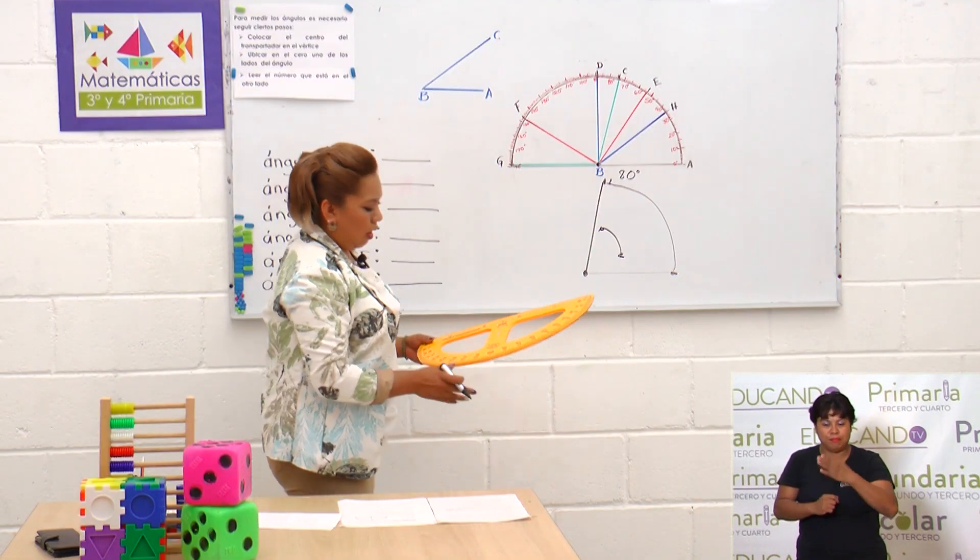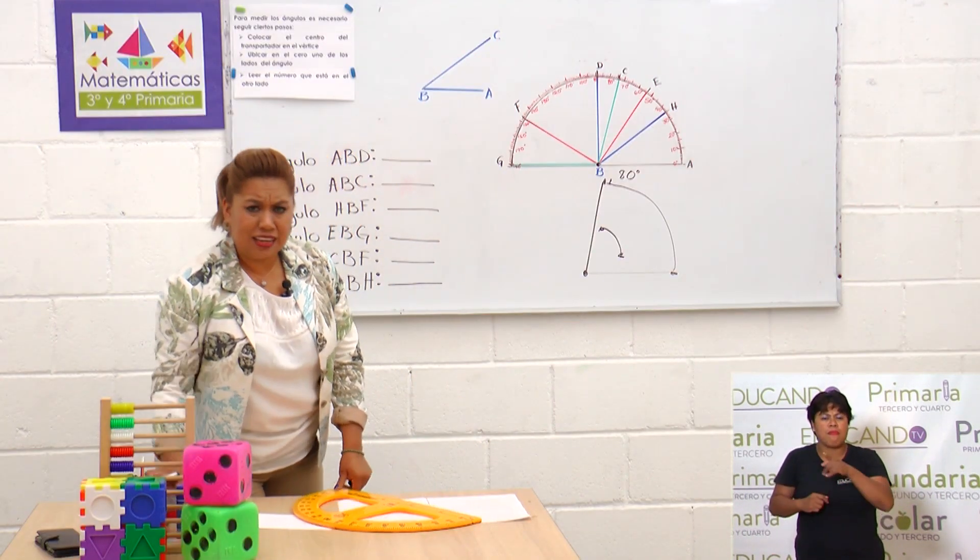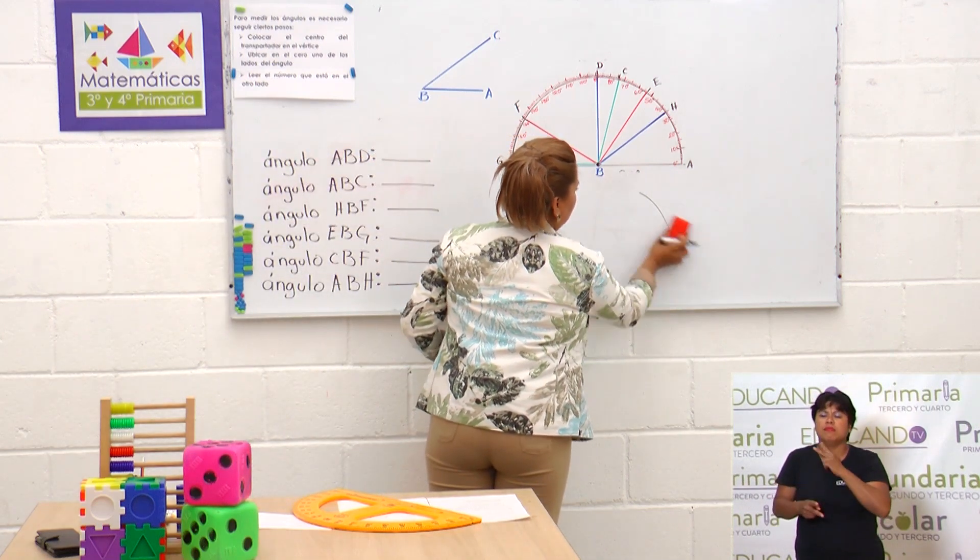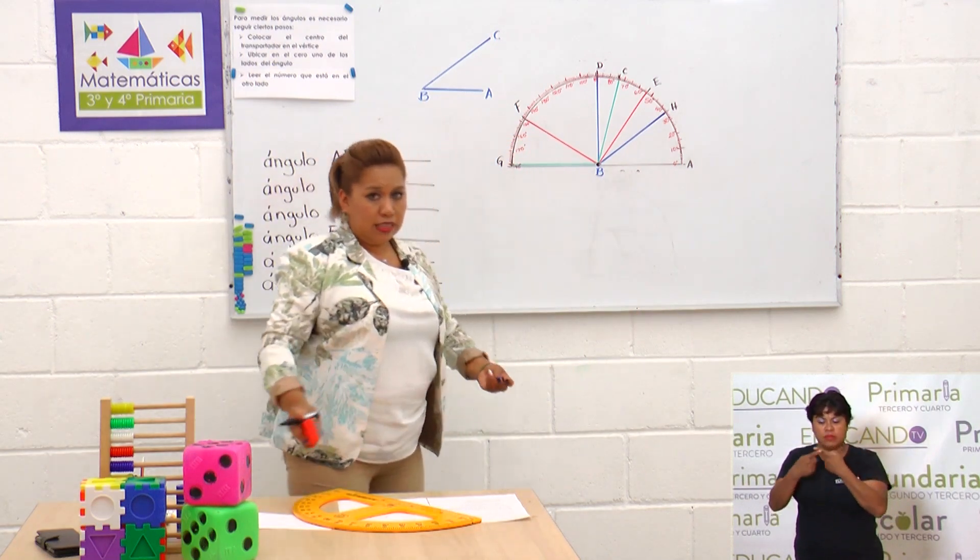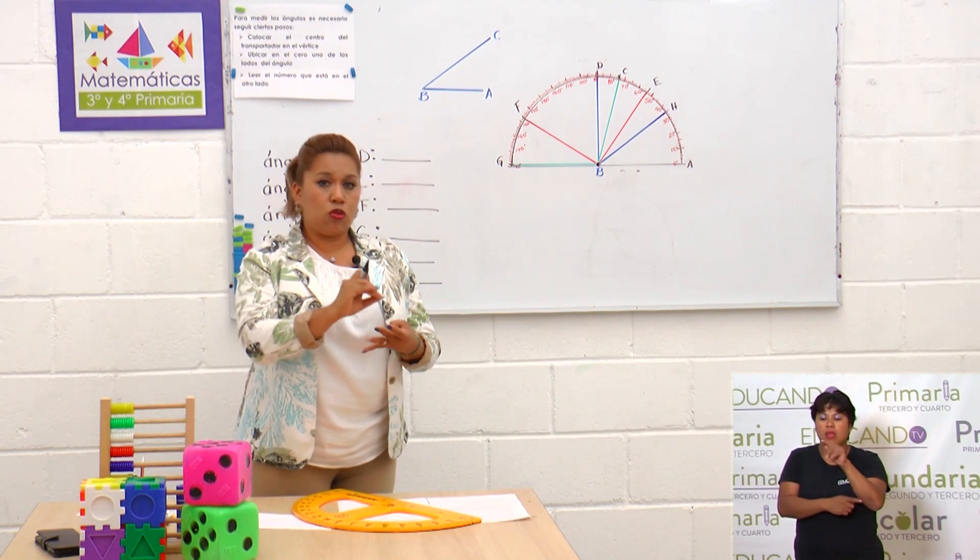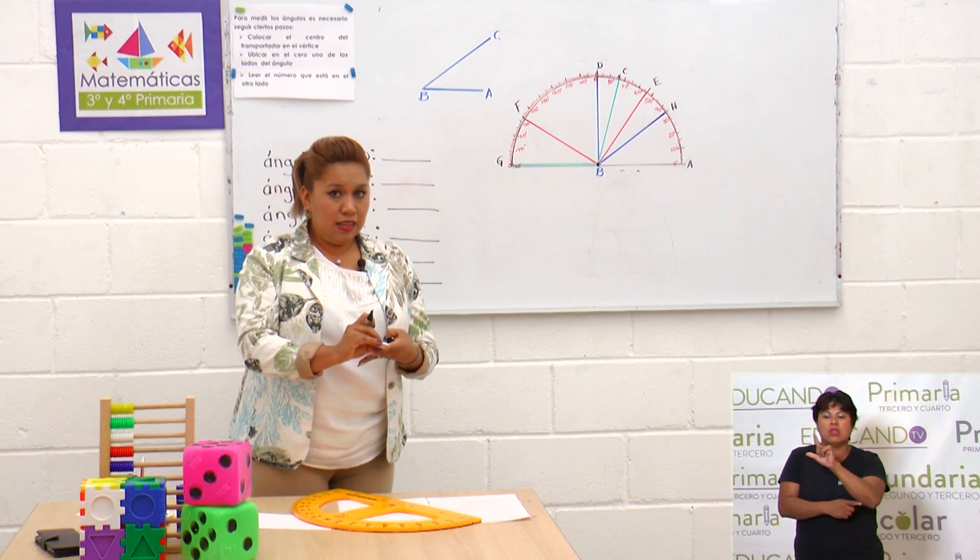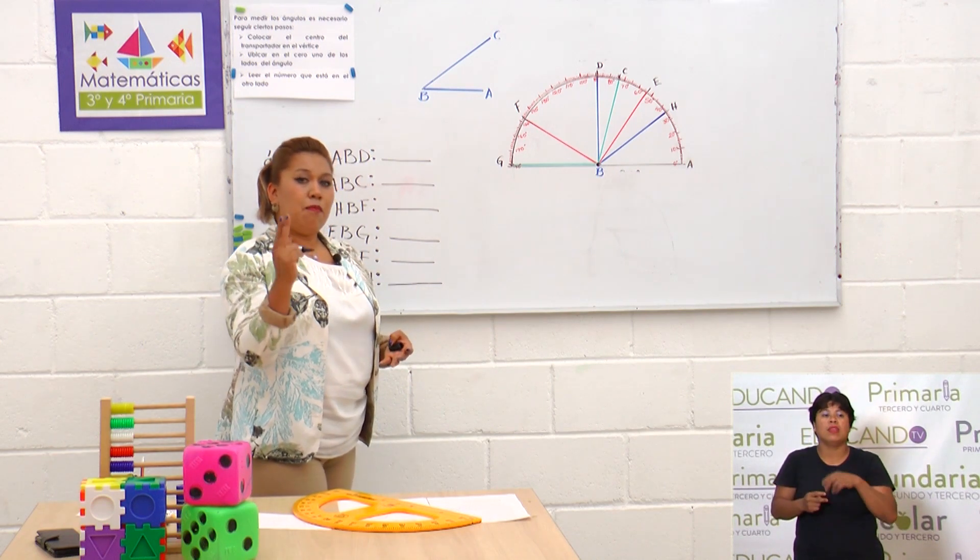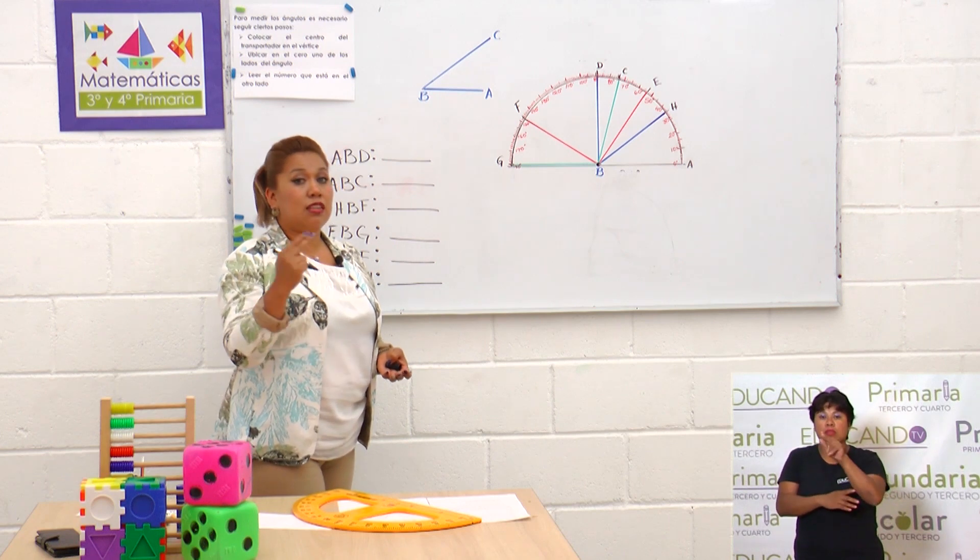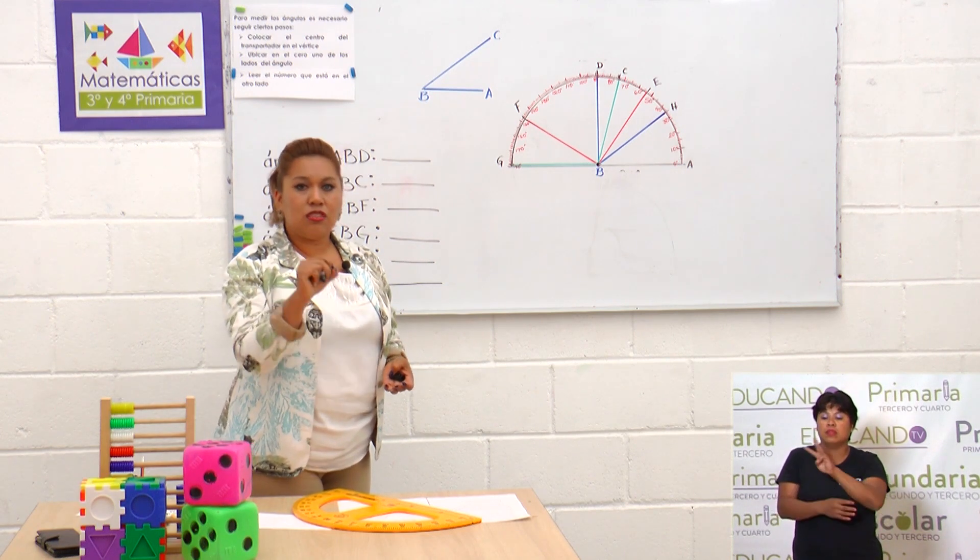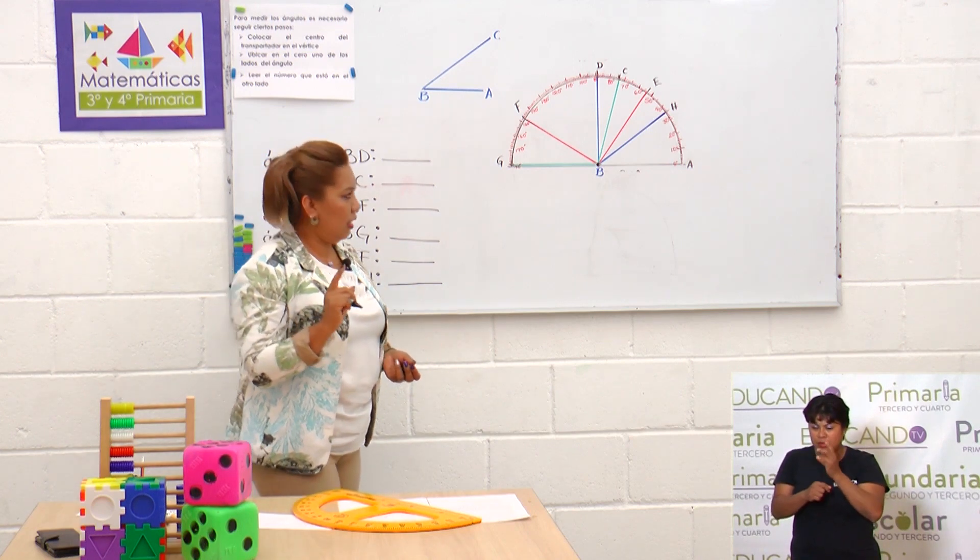Muy bien. Ahora, ¿tú te has puesto a pensar en dónde se usan los ángulos? Hemos hablado de tres tipos de ángulos: el agudo, el recto, el obtuso, el llano. Existen otros dos: el que mide más de 180 y menos de 360, y el que mide exactamente 360. Ojalá y puedas investigar cómo se llaman.